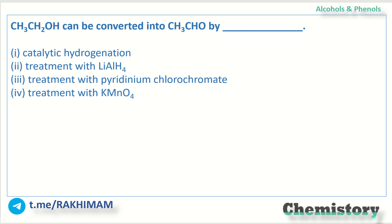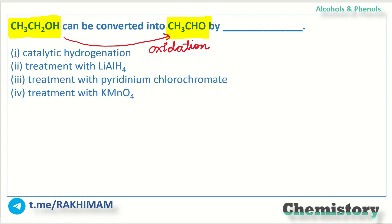The question asks: CH₃CH₂OH can be converted into CH₃CHO by what process? The answer is oxidation. If we consider option 1 — catalytic hydrogenation — it is not possible here, because that is a reduction process, not an oxidation.